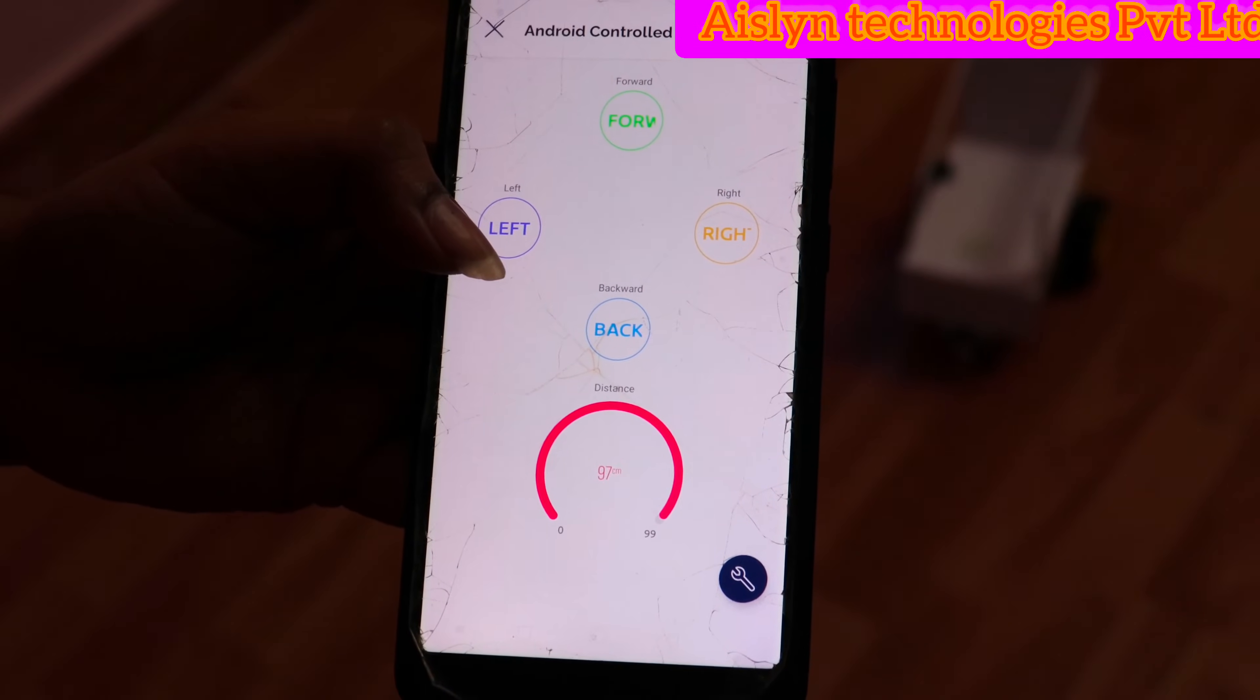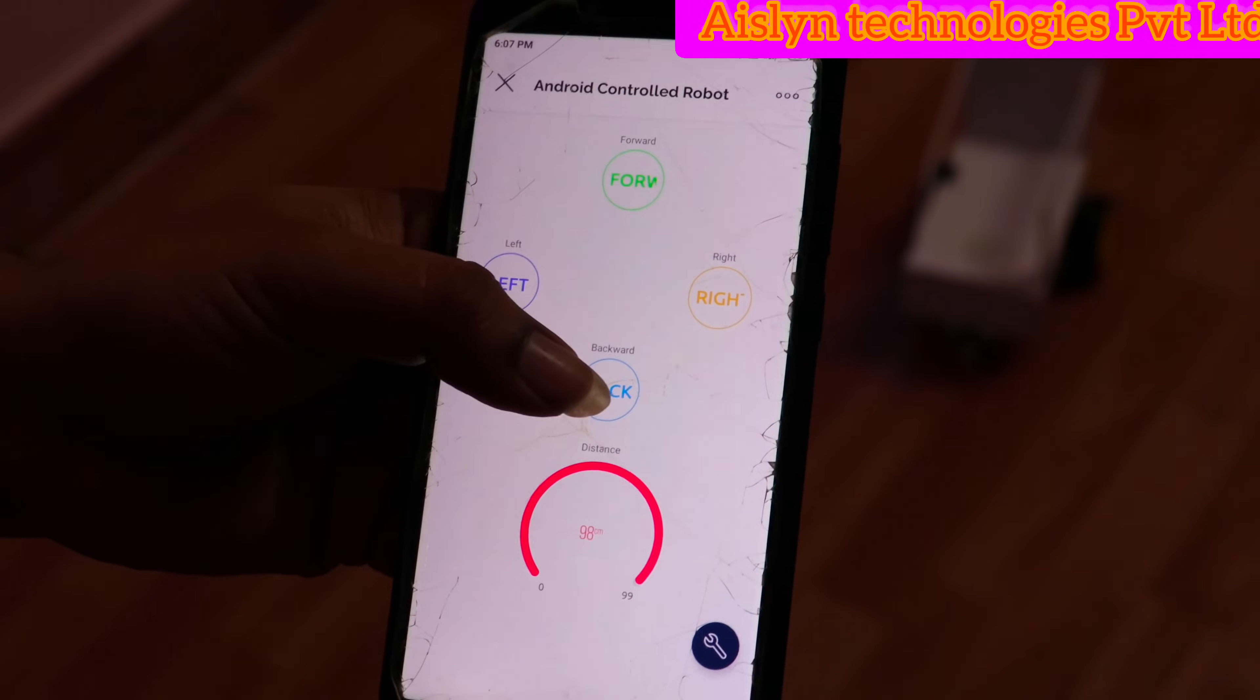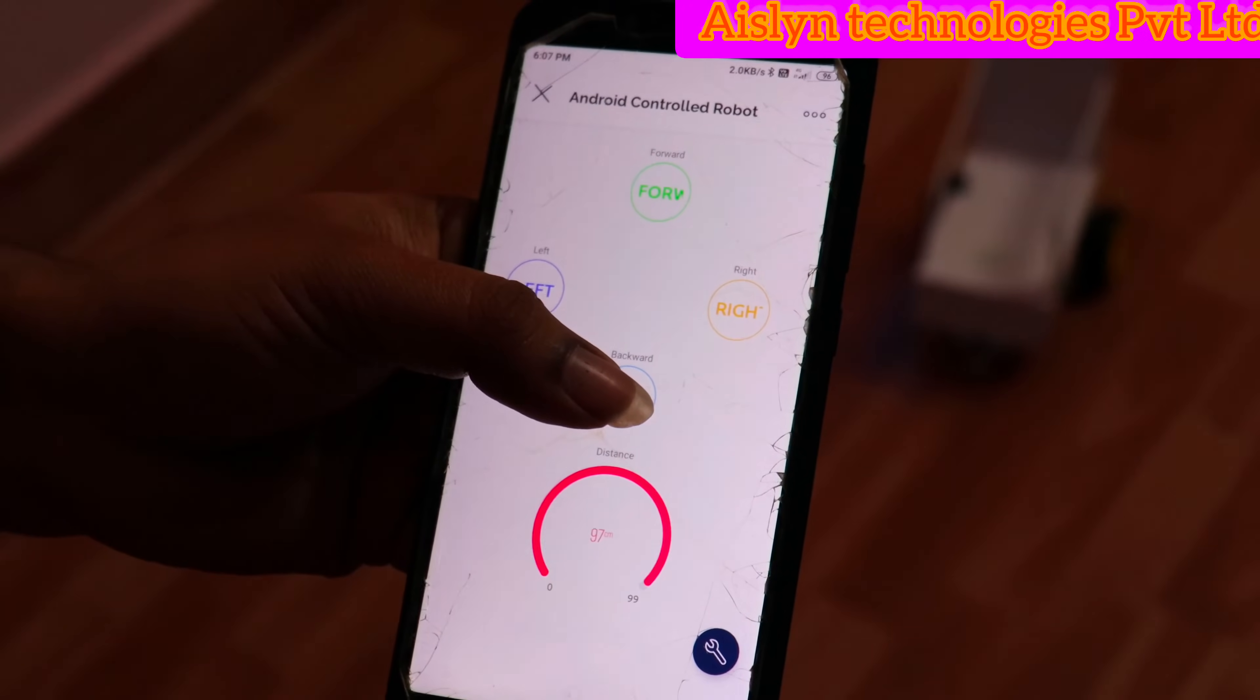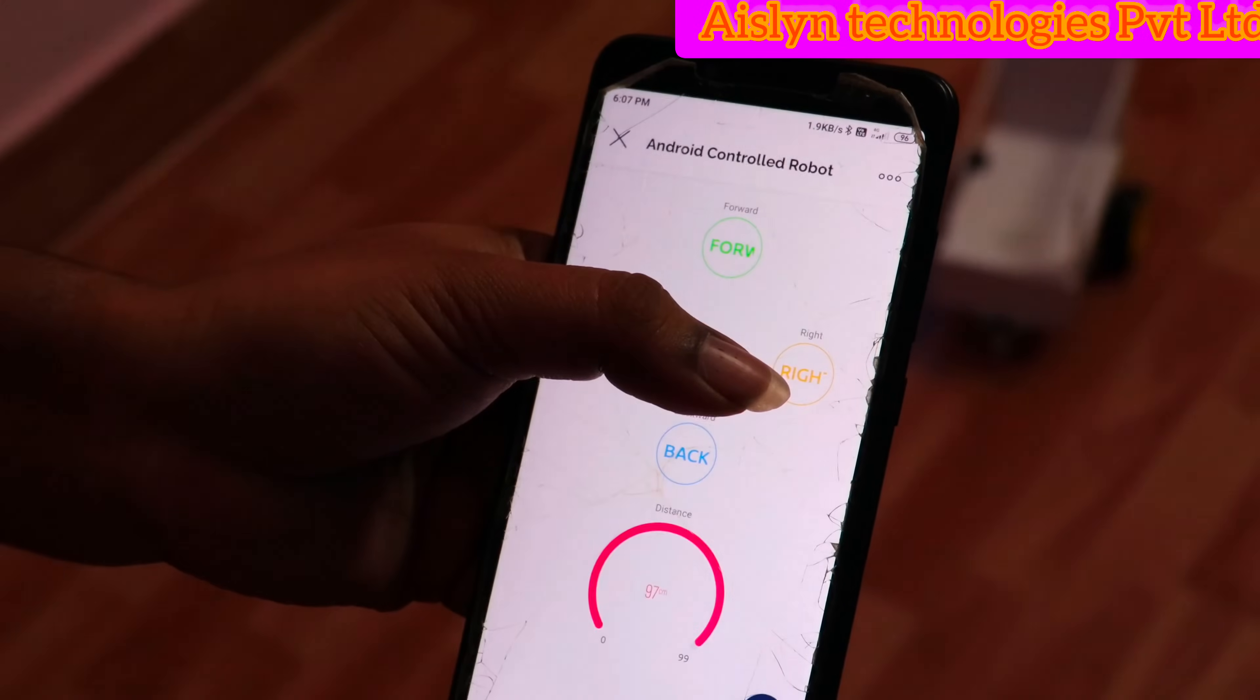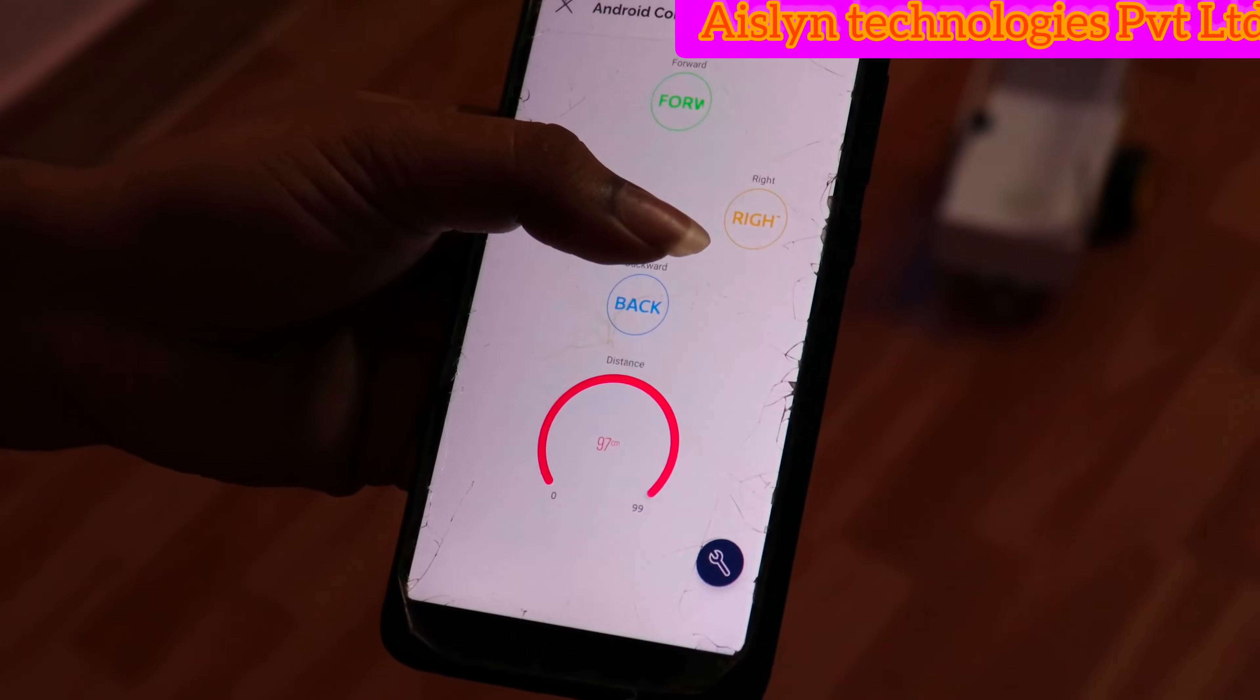If you click left, the robot will move left. If you click back, the robot will move back. If you click forward, the robot will move forward. If you click right button, the robot will move right side.